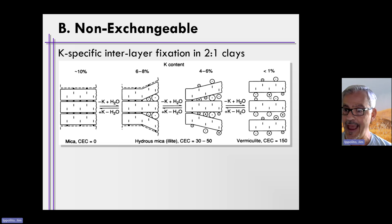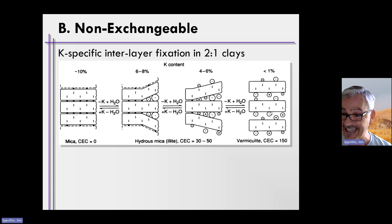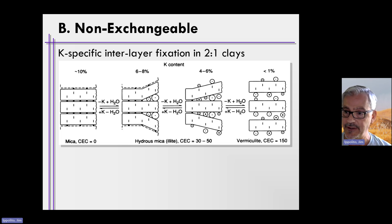When potassium is in the interlayer, it's not readily available — it's slowly available. There's a lot of potassium in the interlayer, and the only potassium that is slowly available is the potassium at the very edge of the interlayer.